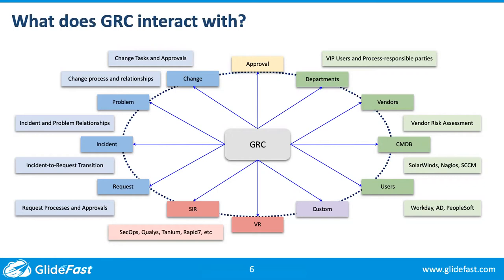Basically, what's available to GRC to interact with is anything and everything except HR, as long as it's in ServiceNow. So if you're getting data from SolarWinds and Nagios into your CMDB, pulling in vendor risk assessments through VRM, or using SecOps for Qualys, Tanium, or Rapid7, all of that data is available to GRC to dig into the business processes and figure out where you need to change processes to remain compliant or where you're elevating the realization of risk.